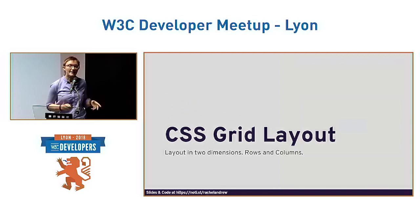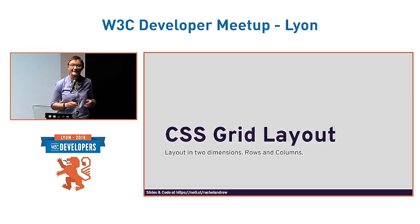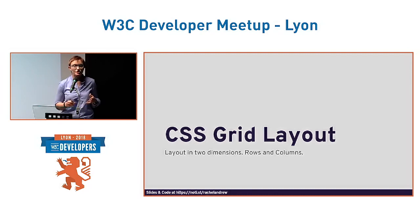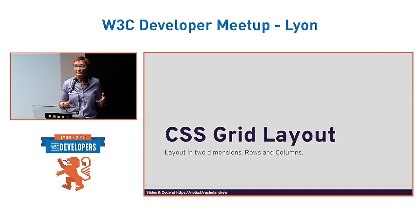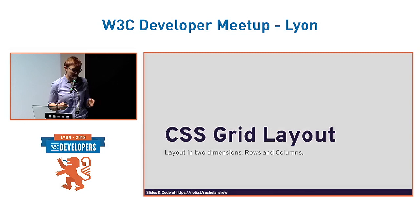Flexbox caused a lot of excitement when it appeared, and I think we all started using it a little too early — we used the vendor-prefixed version and battled with three versions of Flexbox as it moved through the specification process. Then we got Grid, and Grid seemed to just appear to most people because it didn't get developed with vendor prefixes. After the initial Microsoft version, it was developed hidden behind a browser flag until it was pretty much ready in all browsers, and then it landed all at once.